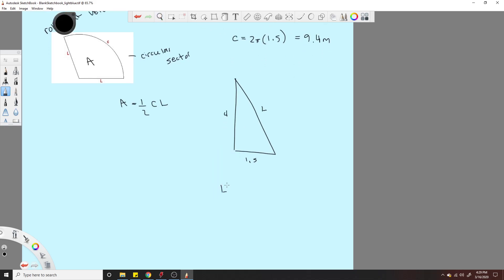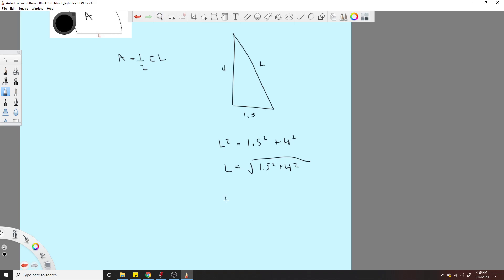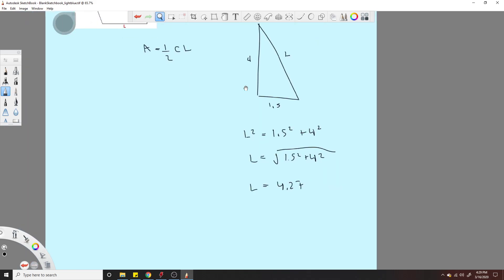Well, that would just be L squared is equal to 1.5 squared plus 4 squared. And that's going to be L is equal to the square root, 1.5 squared plus 4 squared. And then L would be finally equal to 4.27. So now we have our L.